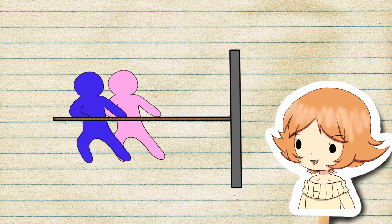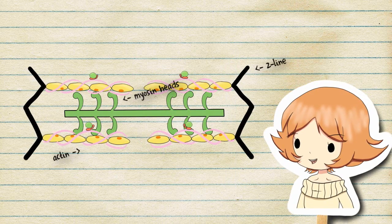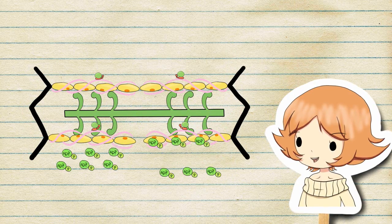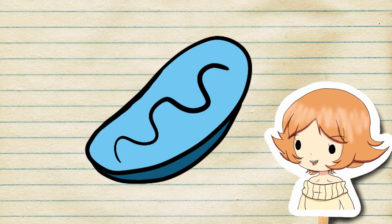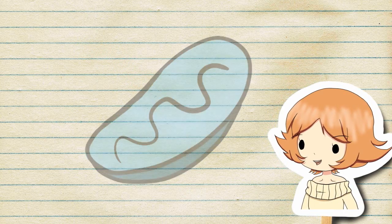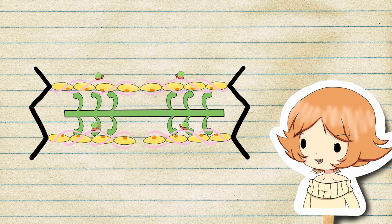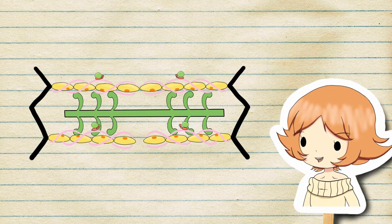The myosin heads move the actin towards the center of the sarcomere. This releases ADP and a phosphate from the myosin. ADP then goes back to the mitochondria for recharging. The myosin continues to pull on the actin and shorten the sarcomere. This is called contraction.